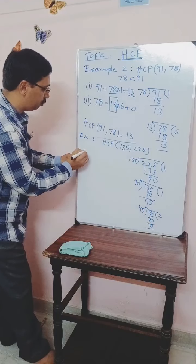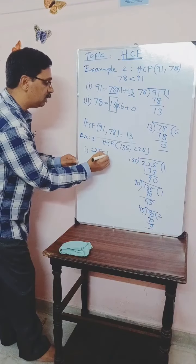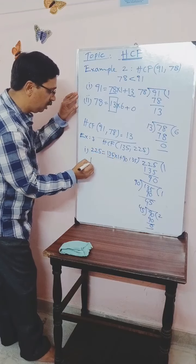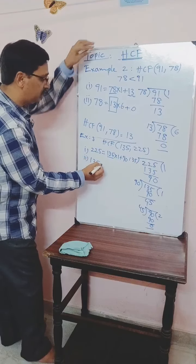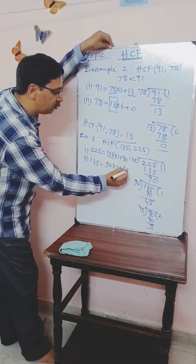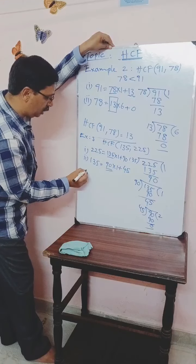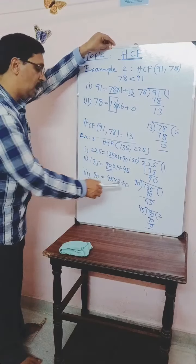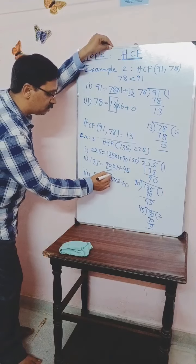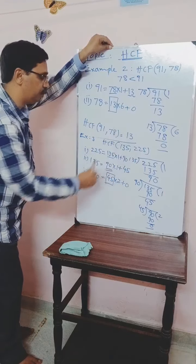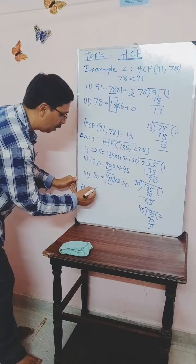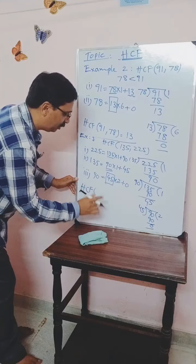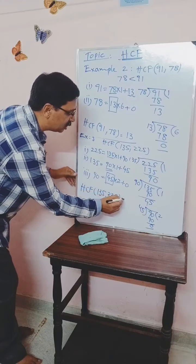There are three steps here. Step 1: 225 = 135 × 1 + 90. Step 2: 135 = 90 × 1 + 45. Step 3: 90 = 45 × 2 + 0. As the remainder is 0, the divisor so obtained in this step is the HCF of these numbers. So HCF(135, 225) = 45.